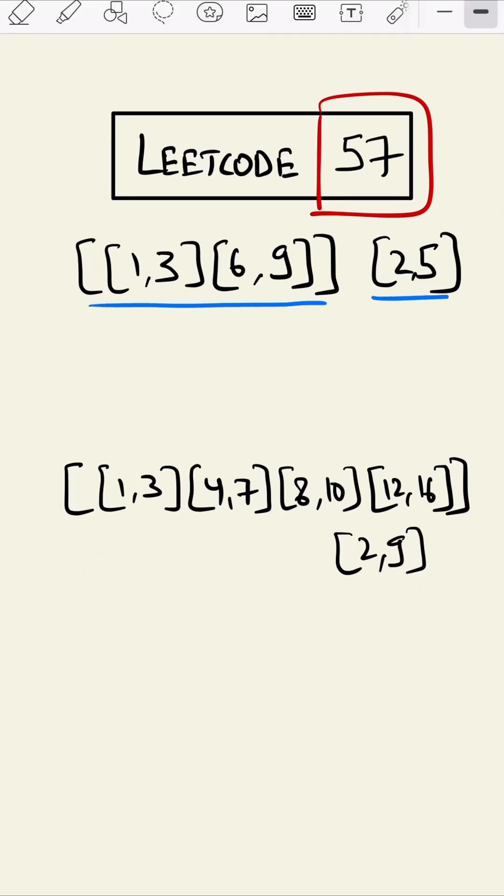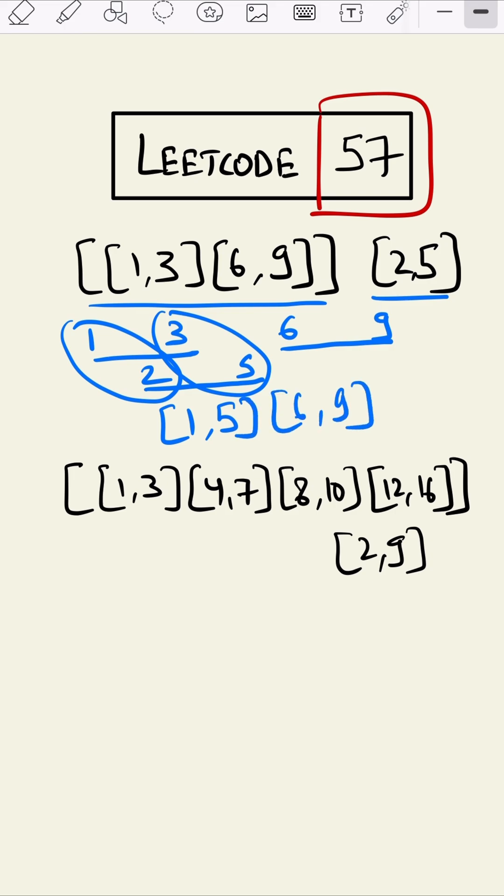Suppose this is our given interval and this is the interval we have to add. We can draw it on a number line so 1 to 3 interval will be this and 6 to 9 will be this and 2 to 5 will come somewhere around here, 2 here and 5 here. So our interval will be the minimum of this will be 1 and the maximum of this which will be 5, and 6 to 9 will remain as it is because there is no overlap here.